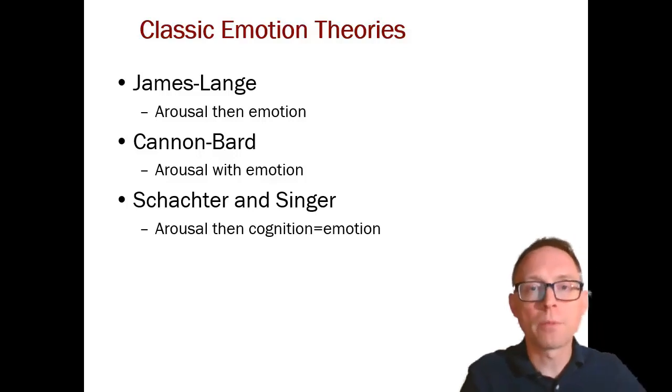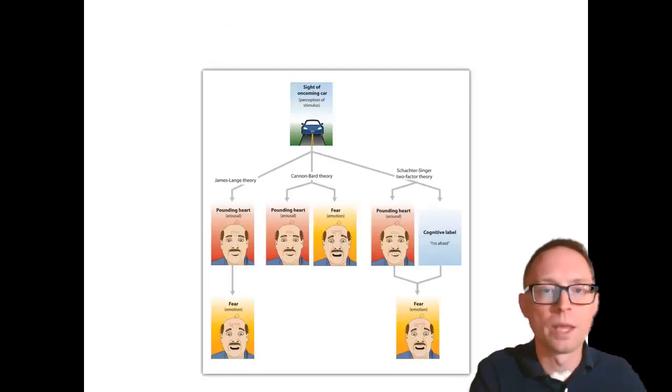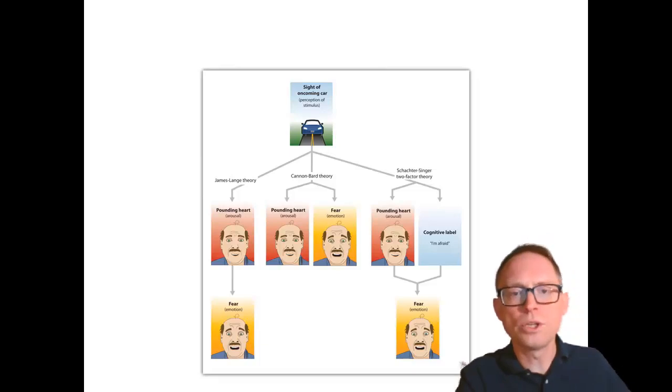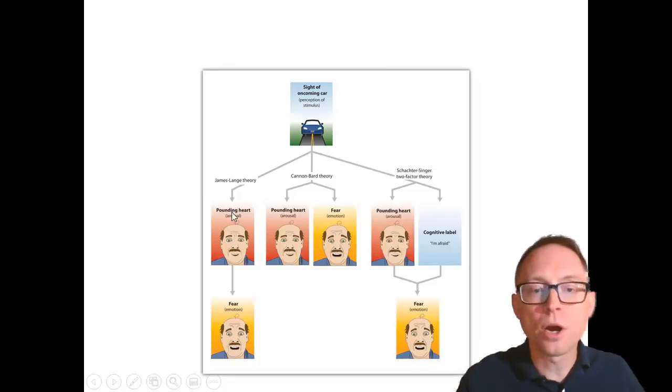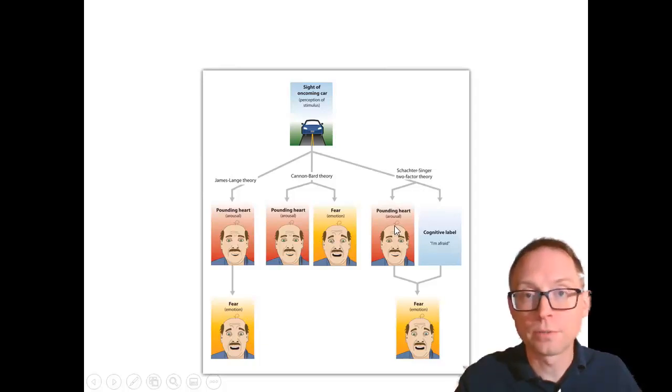Of these, Schachter and Singer is probably the most famous, at least nowadays. In fact, the entire second part of this, the second video is going to be all about Schachter and Singer. But to look at these, here's the way you think about these. Let's say you see a car coming right at you. The James Lang theory says that first your heart starts beating fast. That's the arousal. Your heart's beating fast and that creates fear. Cannon Bard says these happen at the same time. You experience the fear while your heart's beating fast, happening at the same time. In the meantime, Schachter and Singer are saying that your heart starts beating faster. You're experiencing the arousal and then you have a cognitive label, a cognitive interpretation. Hey, my heart's beating fast. Why is my heart beating fast? Oh, the car's coming at me. I must be experiencing fear.